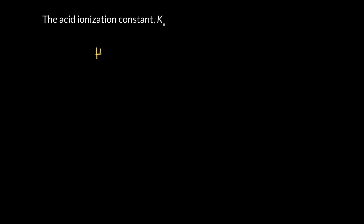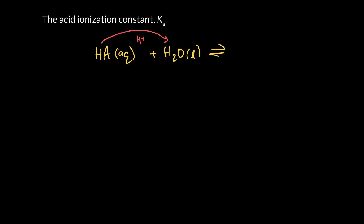We're going to take a look at the acid ionization constant Ka, defined for any weak acid. The Ka reaction is worth knowing — you have to know it. The acid itself, if it's monoprotic, we're going to write as HA. The acid reacts with water, and what makes it an acid is that it can donate a proton to water — that's Brønsted-Lowry. If it gives a proton to water, it converts it into the hydronium ion, H₃O⁺.